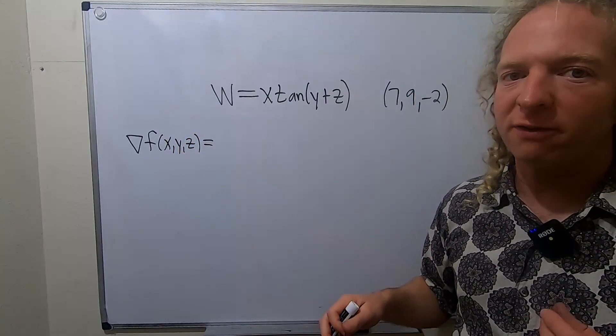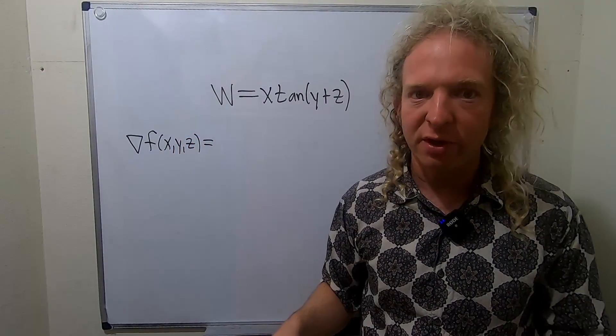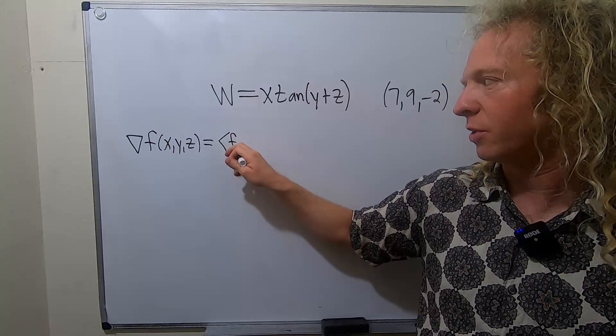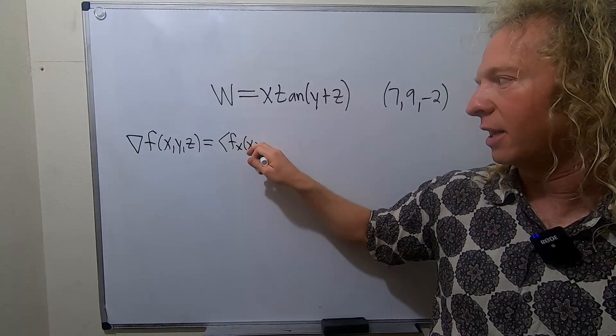is given by the vector of first order partial derivatives. So the first component is the partial with respect to x, so fx at x, y, z.